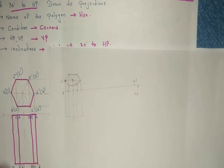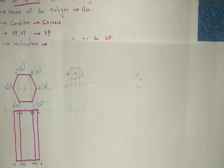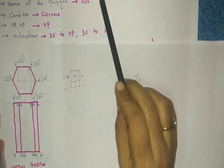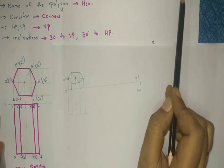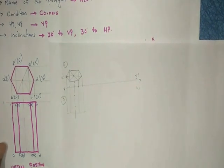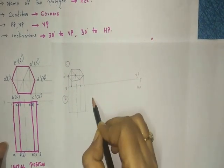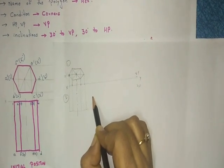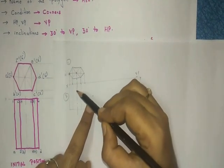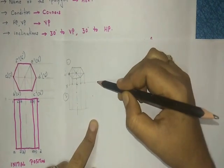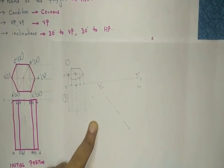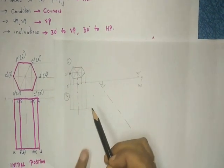The second step depends on the angle. The question states: the axis is inclined at 30 degrees to VP. So the first position leads to the second position, and then we draw the third step. For the third step, first draw the axis line of any length at an angle of 30 degrees.